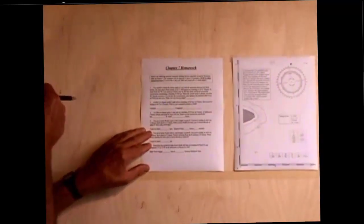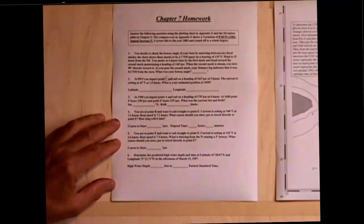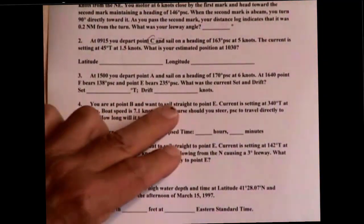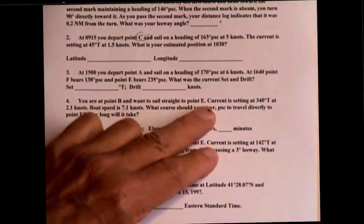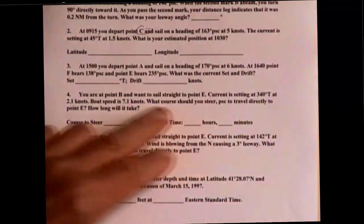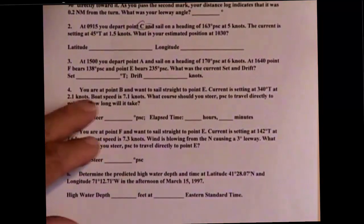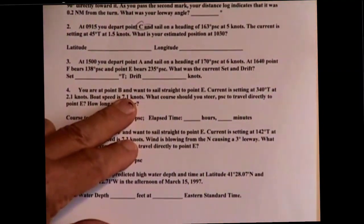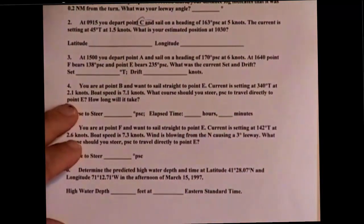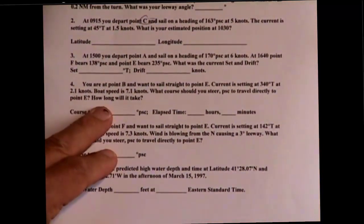This is number four, and you're at point B and you want to sail straight to point E. Current is setting at 340 degrees true at 2.1 knots. Boat speed is 7.1 knots. What course should you steer, PSC, to travel directly to point E? How long will it take you?